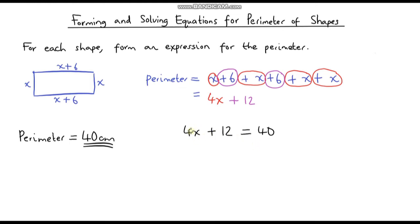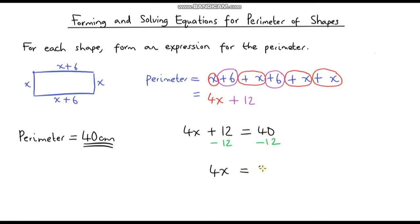We want to work out the value of x. At the moment we've got this plus 12 — we want to get rid of that to isolate x. So to get rid of 12, we're going to take away 12. But whatever we do to one side of the equation, we have to do exactly the same to the other side, otherwise the equation is not balanced. So if we take away 12 from this side, we have to take away 12 from this side. On the left-hand side we're just left with 4x, because 12 minus 12 is 0. And on the right-hand side we've got 40 minus 12, which is 28.